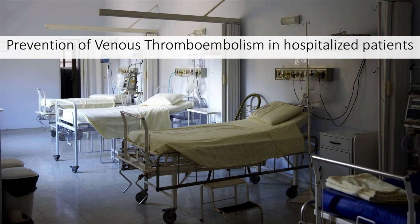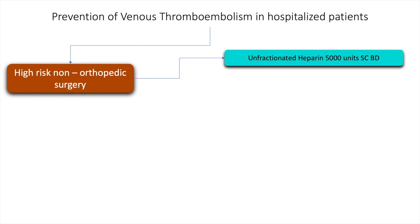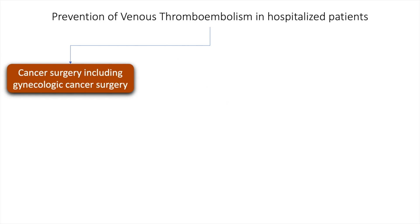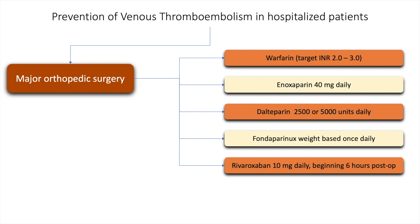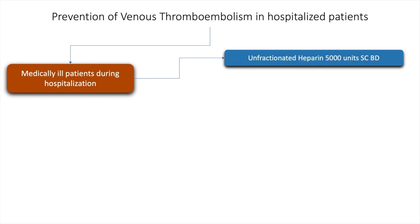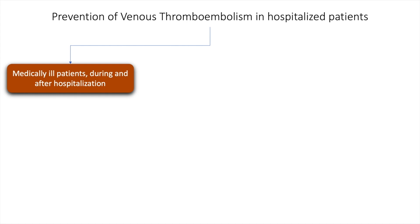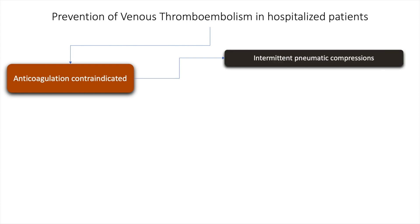Prevention of venous thromboembolism in hospitalized patients is an important concept. For high-risk non-orthopedic surgery, unfractionated heparin, enoxaparin, or dalteparin may be used. For cancer surgery including gynecologic cancer surgery, enoxaparin may be used. Major orthopedic surgery requires anticoagulation with warfarin, enoxaparin, dalteparin, fondaparinux, rivaroxaban, or intermittent pneumatic compressions with or without pharmacological prophylaxis. Medically ill patients during hospitalization may be given unfractionated heparin, enoxaparin, dalteparin, or fondaparinux. Medically ill patients during and after hospitalization may be anticoagulated with betrixaban. In patients in whom anticoagulation is contraindicated, pneumatic compressions may be considered.